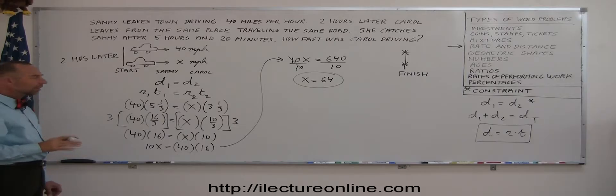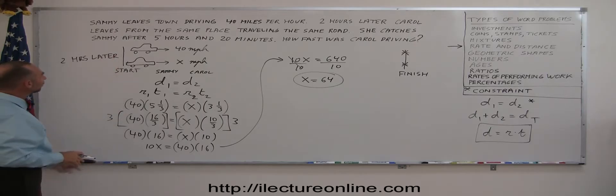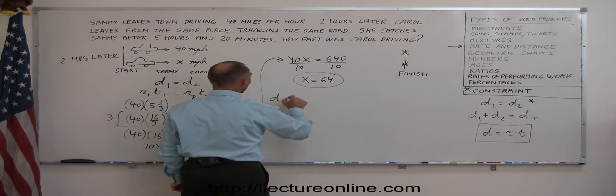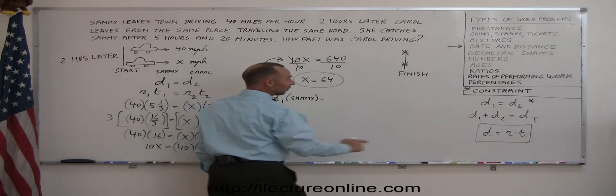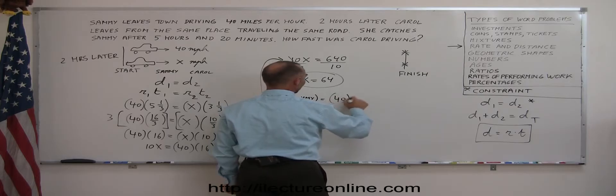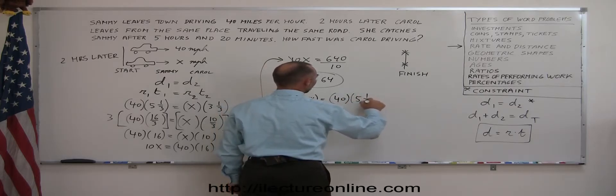Now, to make sure we did this correctly, is there some way we can check? Well, if Sammy travels 40 miles per hour for 5 hours and a third, then I can calculate how far Sammy travels. So distance 1 for Sammy is equal to the distance equals rate times time. So the rate is 40 times the time, which is 5 and a third.